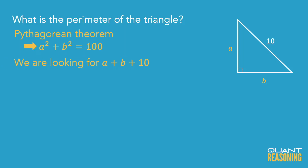The question wants to know the perimeter. For the perimeter, I'd need to know the hypotenuse — which I do know is 10 — but I also need to know the sum of the two legs. So let's look at the statements.